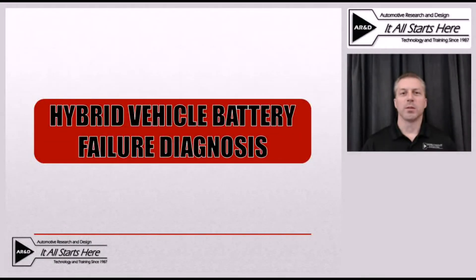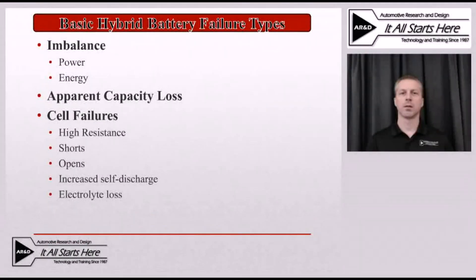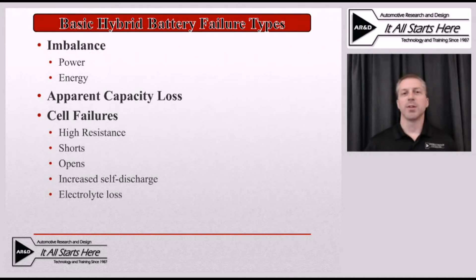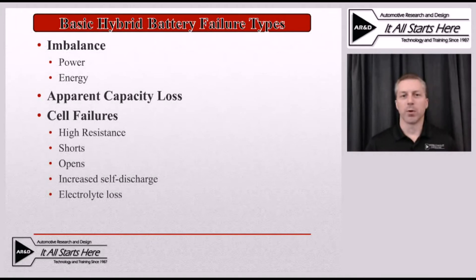Today's training segment is going to take a brief look at Hybrid Vehicle Battery Failure Diagnosis. We're going to start by looking at some of the basic failure types that can happen within these battery packs — imbalances in both power and energy, Apparent Capacity Loss (ACL), and cell failure modes including high resistance, shorts, open circuits, increased self-discharge rate, and electrolyte loss that can all impact the performance of this battery pack.